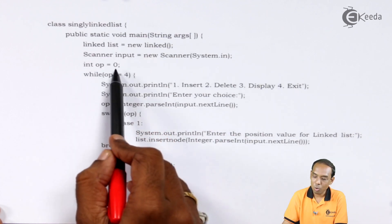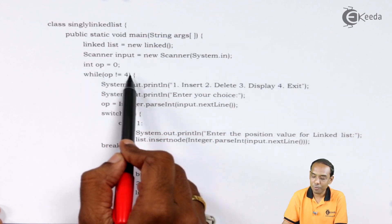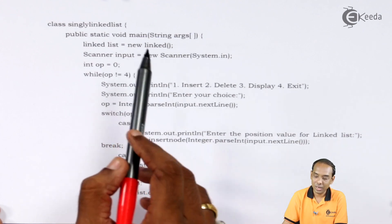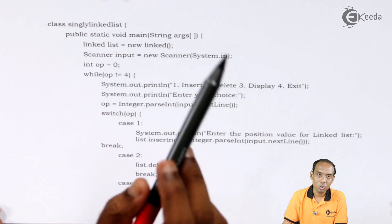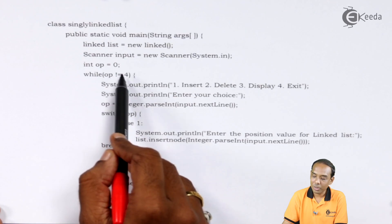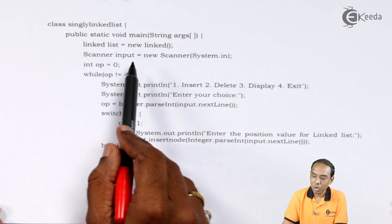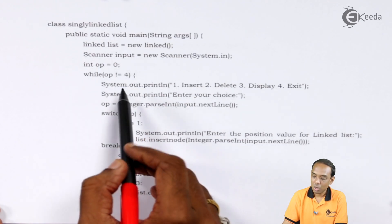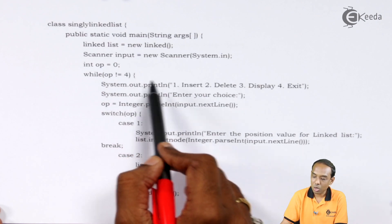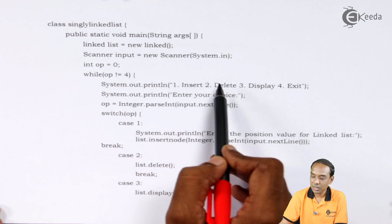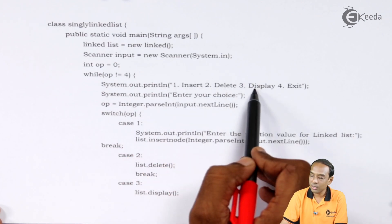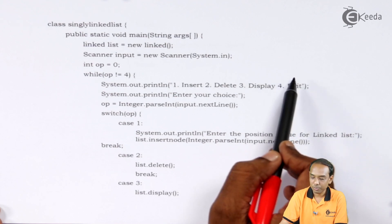I write down while op not equal to 4. Four is taken as the exit condition — where the program ends. So while op is not equal to 4 I am going to use these conditions. I write down system dot println with options: first insert, second delete, third display, and fourth exit.